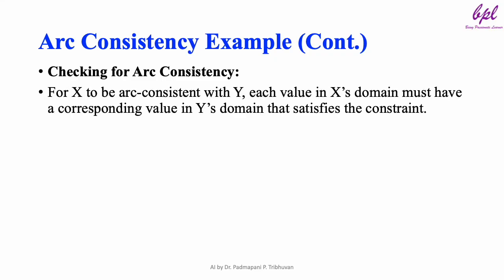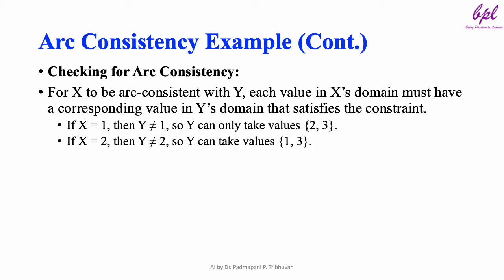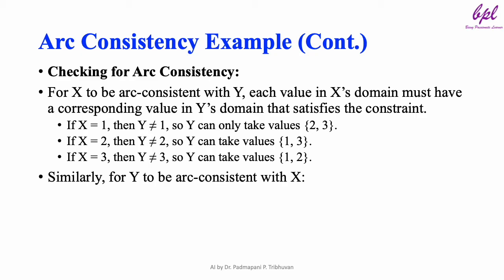For X to be Arc-Consistent with Y, each value in X's domain must have a corresponding value in Y's domain that satisfies the constraint. If X equals 1, then Y is not equal to 1, so Y can only take values 2, 3. If X equals 2, then Y is not equal to 2, so Y can take values 1, 3. If X equals 3, then Y is not equal to 3, so Y can take values 1, 2.